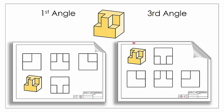The same thing applies when it comes to our end views as well. If I want to look in from the right hand side of the object, it appears on the left hand side of my front elevation in first angle, whereas in third angle it appears on the right hand side. And looking in from the left, it will appear on the right hand side in first angle, whereas it will appear on the left hand side in third angle.